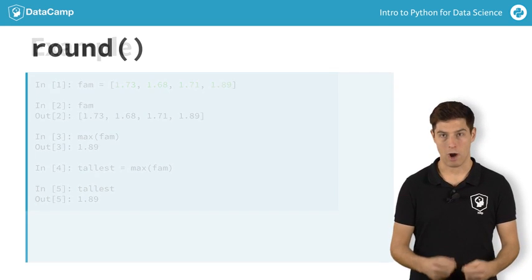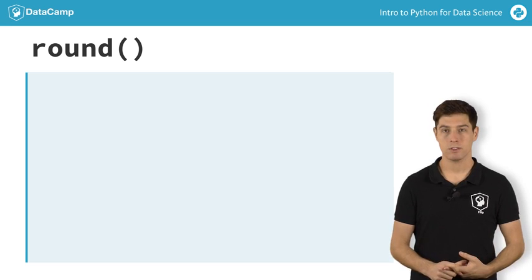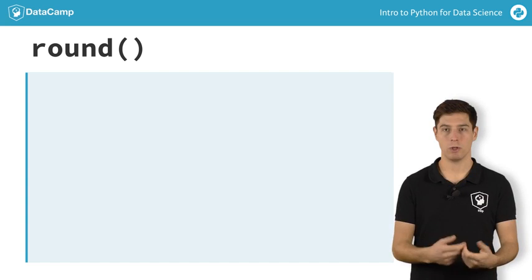Another one of these built-in functions is round. It takes two inputs. First, a number you want to round. And second, the precision with which to round. So how many digits behind the decimal point you want to keep.